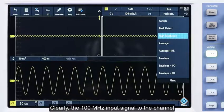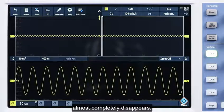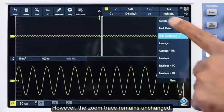Clearly, the 100 MHz input signal to the channel almost completely disappears. However, the zoom trace remains unchanged.